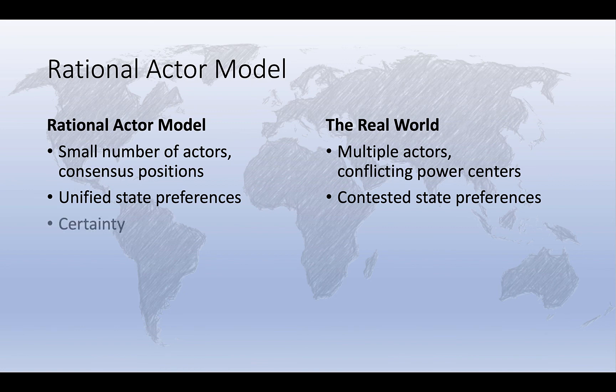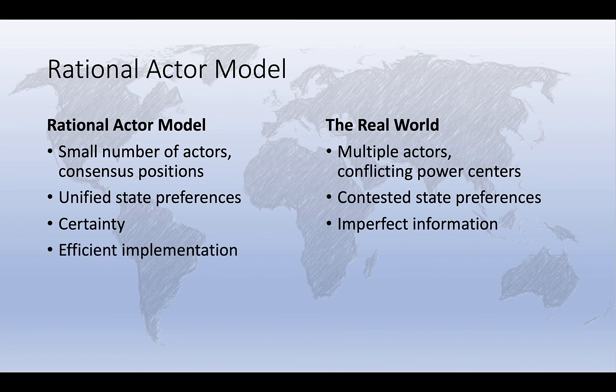The rational actor model generally assumes that there is a high degree of certainty in our goals and in the avenues available to pursue them. In reality, decision-making is often characterized by incomplete or even inaccurate information. The rational actor model generally assumes that the implementation of decisions is done in a relatively efficient manner. In reality, implementation is often subject to its own bureaucratic and political processes, and can be delayed, characterized by conflict and miscommunication, and so on.